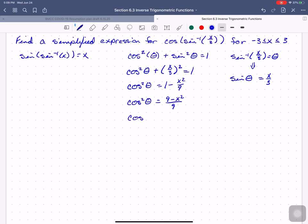Which means that cosine theta is going to be the positive or negative square root of 9 minus x squared all over 9, which simplifies to 1 third times the square root positive or negative of 9 minus x squared. But now we get to actually pick one.